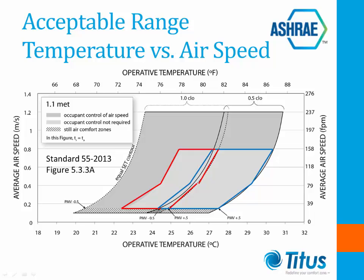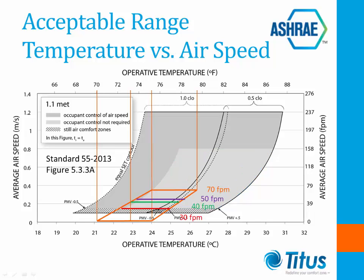Higher velocities can also be used. Figure 5.3.3a from Standard 55 illustrates the acceptable ranges of operative temperature and average airspeed for the 1.0 and 0.5 CLO comfort zones at a humidity ratio of 0.010. The red enclosure represents occupants with 1.0 CLO and the blue enclosure shows the range for occupants with 0.5 CLO. Comparing this chart with ADPI: the horizontal lines starting at the bottom represent no air motion, 30 feet per minute average air motion in red, 40 feet per minute average air motion in green, 50 feet per minute air motion in purple.